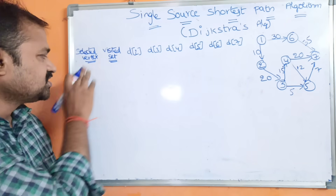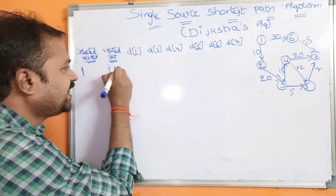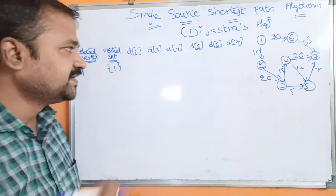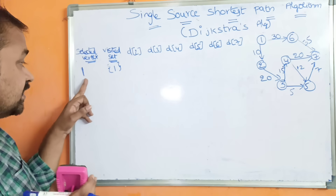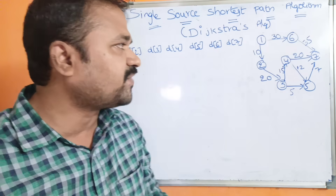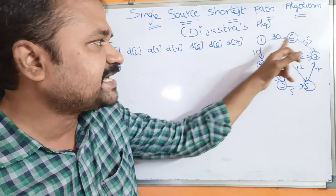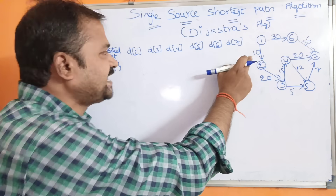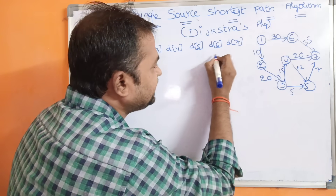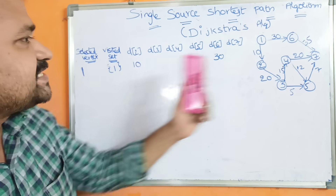The visited set — till now we have visited only the first vertex, so the visited set is {1}. A set is a collection of elements enclosed in curly braces. Next, we have to explore the adjacent vertices of 1. The adjacent vertices of 1 are: vertex 2, with distance 10 from 1 to 2, and vertex 6, with distance 30 from 1 to 6.